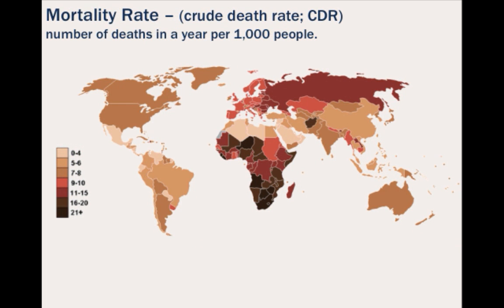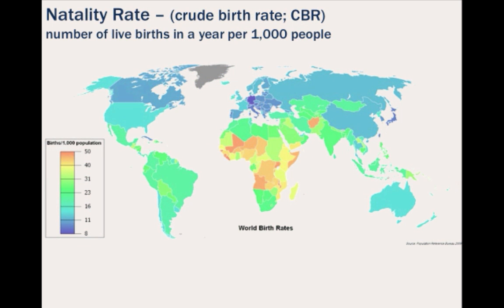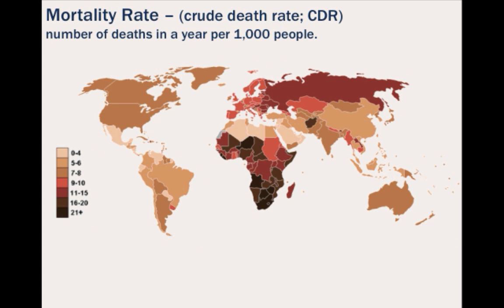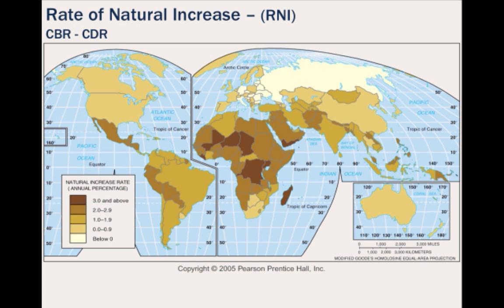We can look at mortality rate, which is also called the crude death rate, or CDR for short, which is the number of deaths in a year per 1,000 people, and you see largely the same story. Both the natality rate and mortality rate are relatively high in the same places. There's also the rate of natural increase, called the RNI, which is essentially your CBR minus your CDR. This map shows you the natural increase rate as a percentage, so you can see places with low growth rates and also where there are high growth rates.